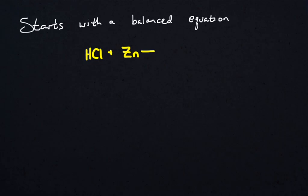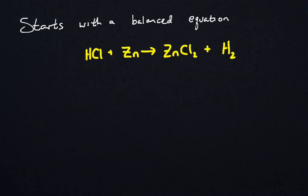How about we take some hydrochloric acid and zinc, and react those together to make zinc chloride and H₂ gas.